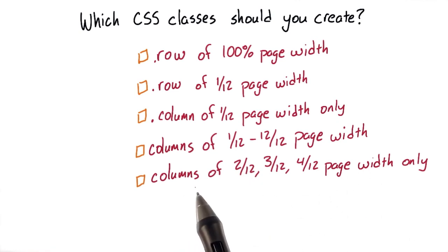Or will we only need to create columns of 2 over 12, 3 over 12, and 4 over 12 page widths to create our framework?